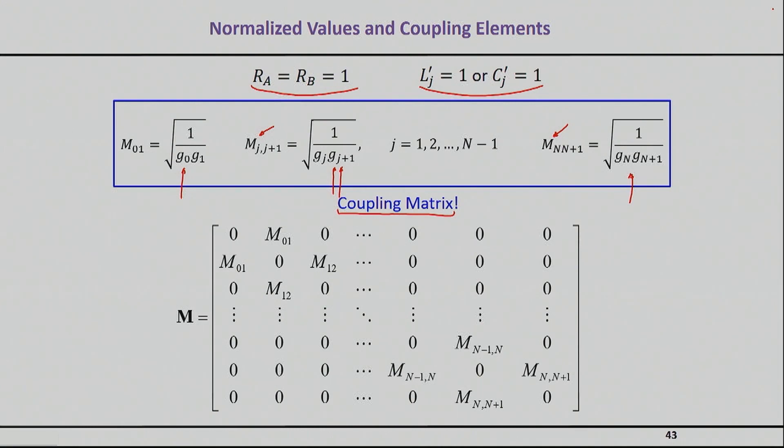The elements one and two are coupled with the coupling section M12, which is square root one over G1 G2. This filter is passive and reciprocal, so you have the same thing on the other side of the matrix. You have the source coupling section to the first element and the load coupling section from the last element. You have a bunch of elements that are zero, meaning there is no coupling between the source and the nth element.